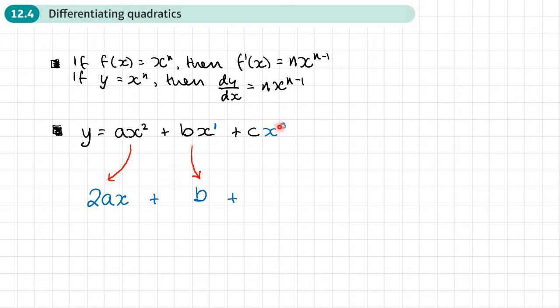Now, if I multiply c by zero, what am I going to get? Zero. So there's no point taking one away from the power because we're just going to end up with zero. Like this.